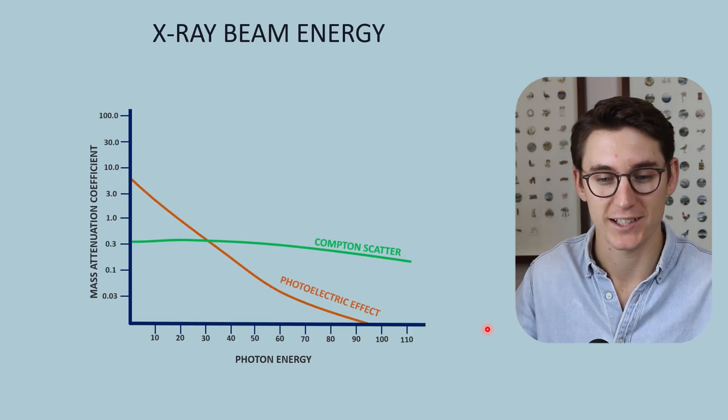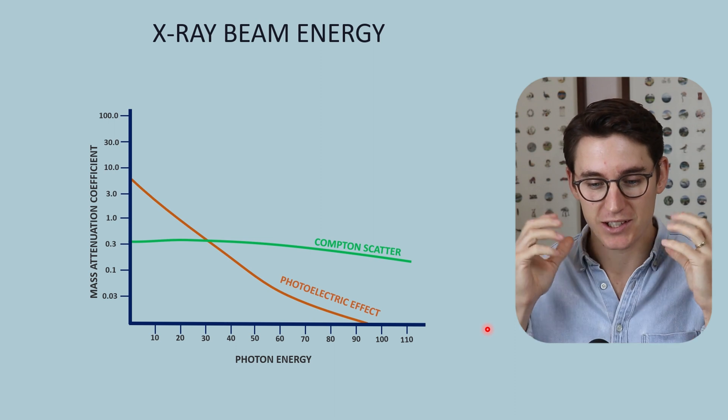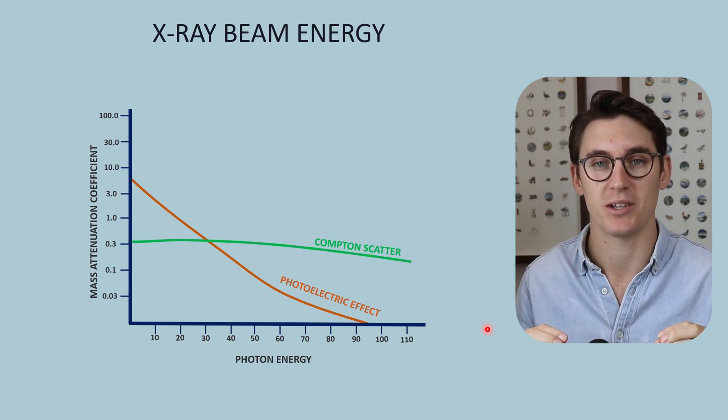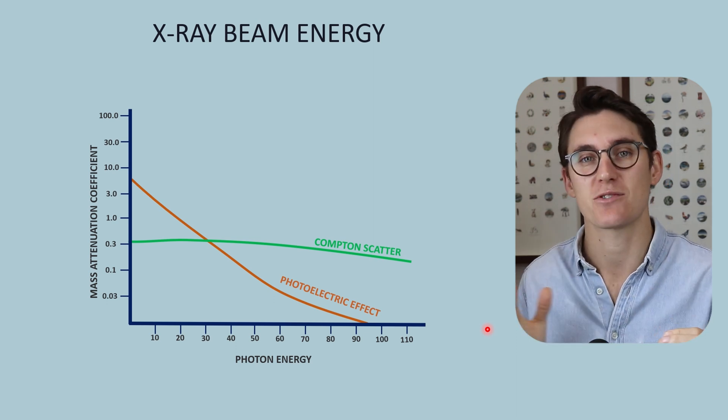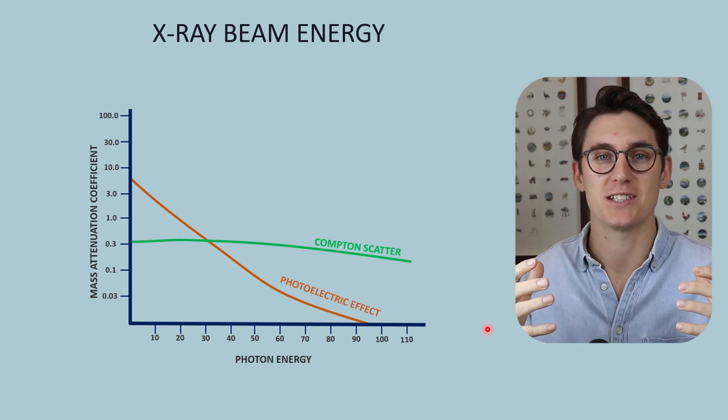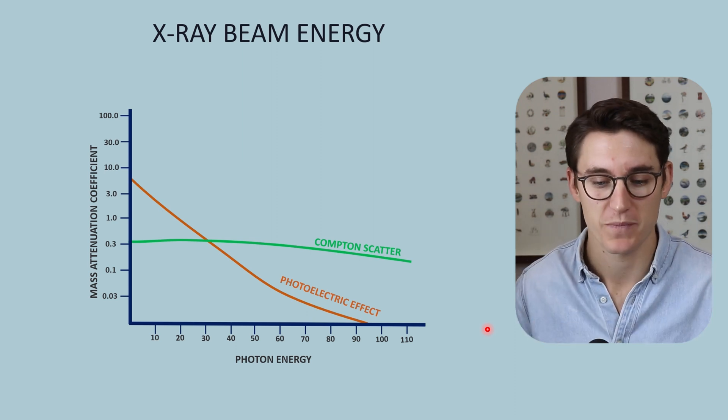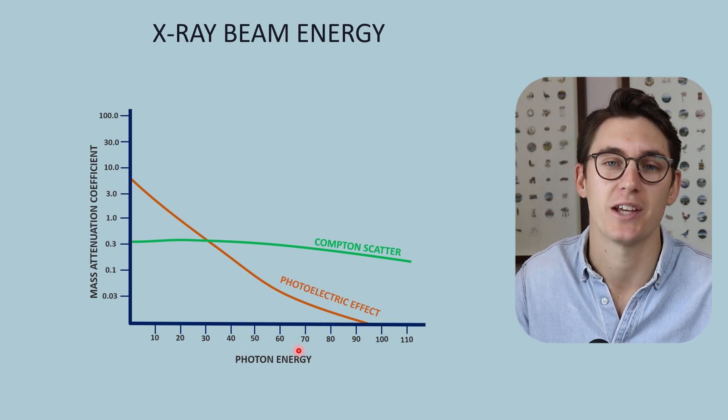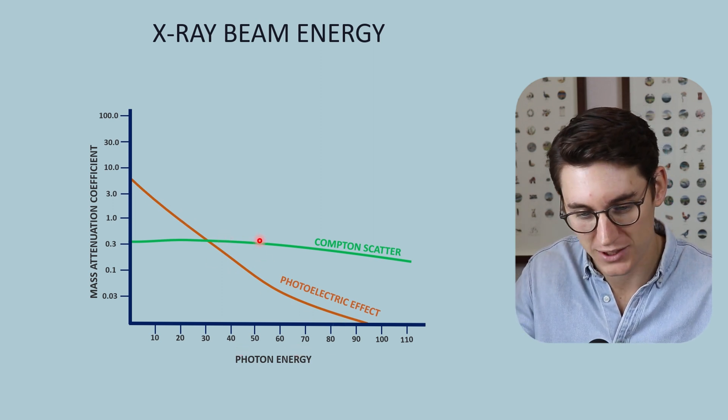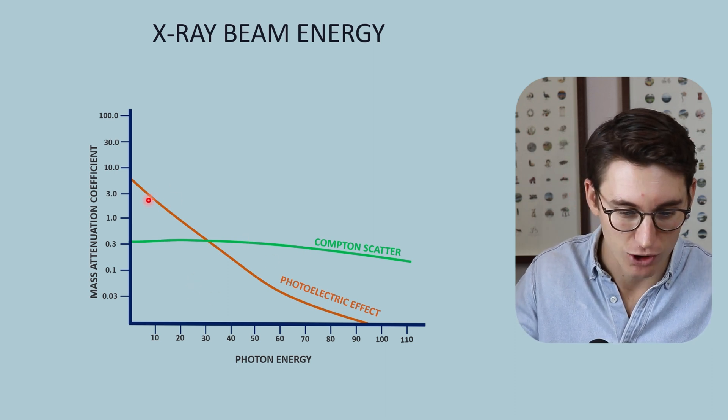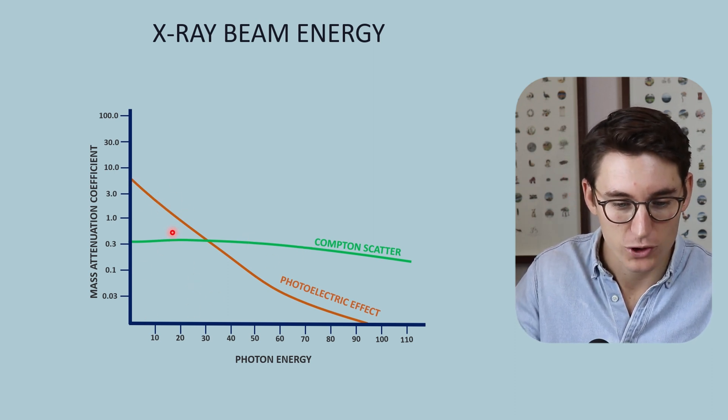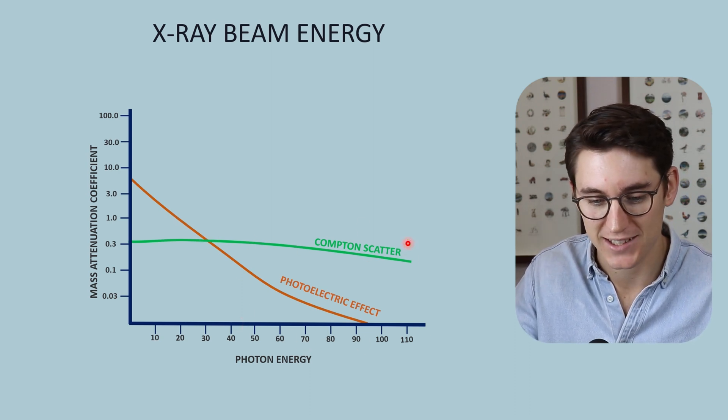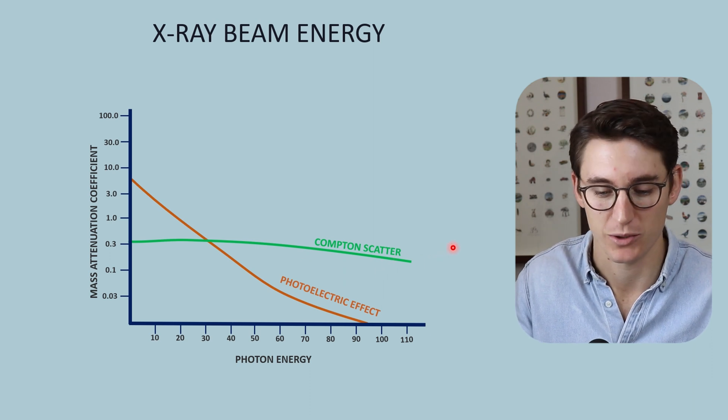The second thing we can look at is x-ray beam energy. And I mentioned in the last talk that this is a difficult concept for people to get their heads around. And I'm going to spend a little bit of time here trying to explain why increasing x-ray beam energy actually increases the amount of scatter contribution to our final image. Now we've seen that the photoelectric effect decreases exponentially as photon energy increases, and Compton scatter just gets this slight decrease. At low photon energies, photoelectric effect predominates, and as that energy increases, our Compton scatter is what contributes most to attenuation within our image.